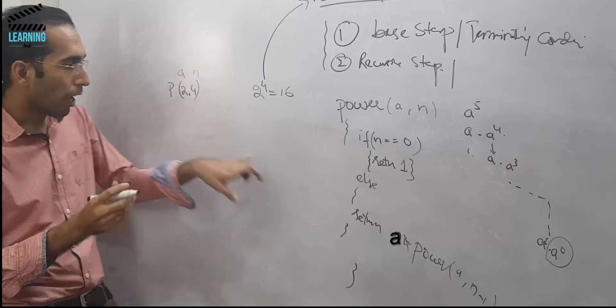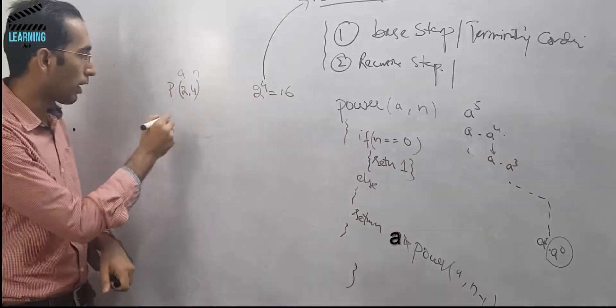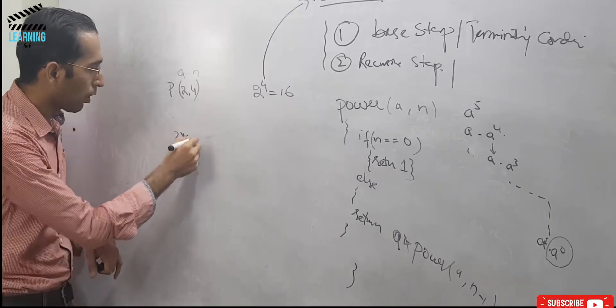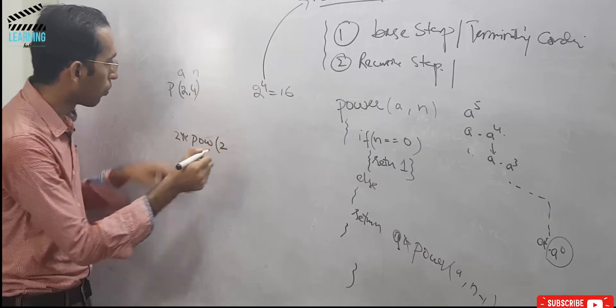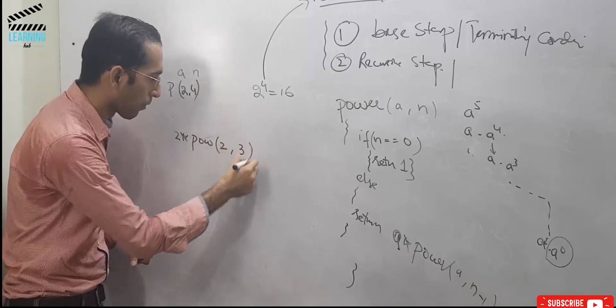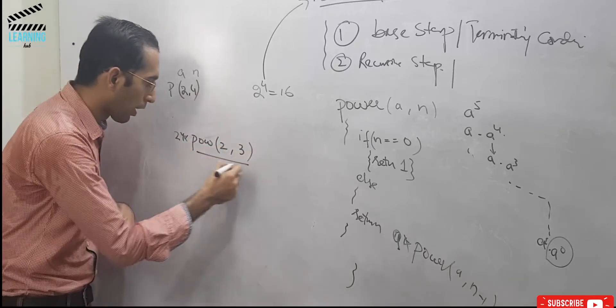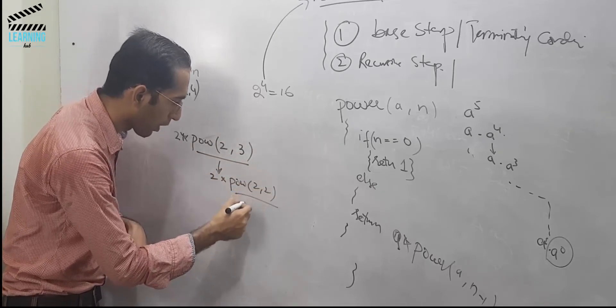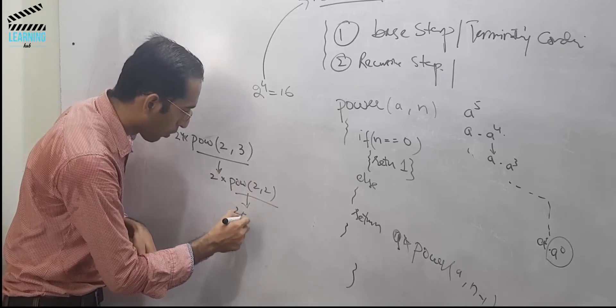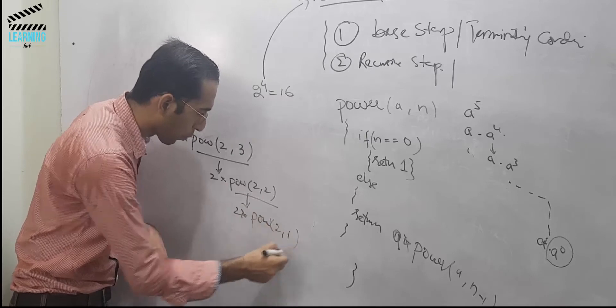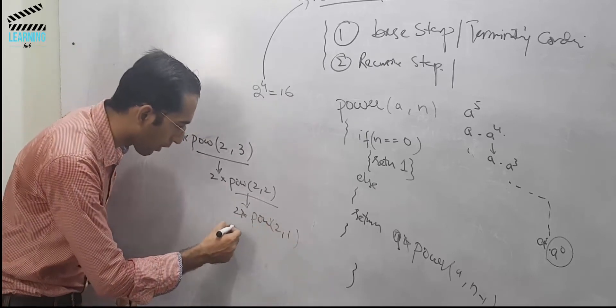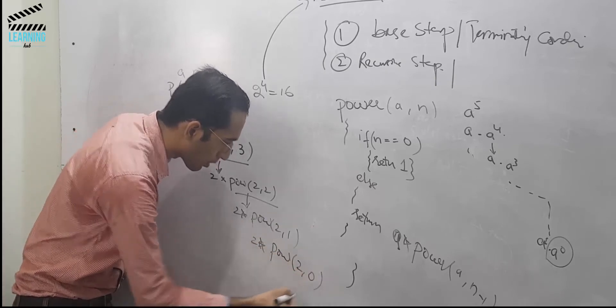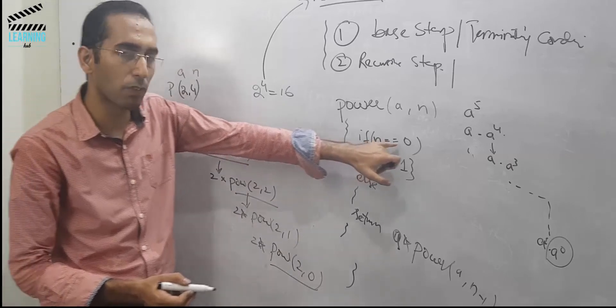So it called: 2 into power of 2, n-1 that is 3. 2 into power of 2, 2. 2 into power of 2, 1. 2 into power of 2, 0. This is equal to 0.